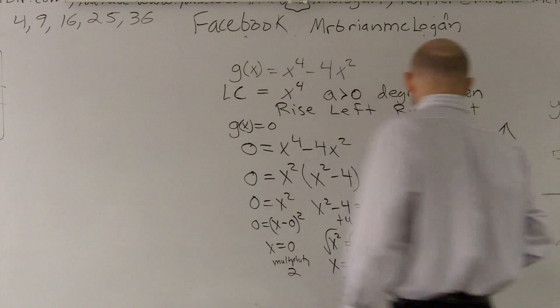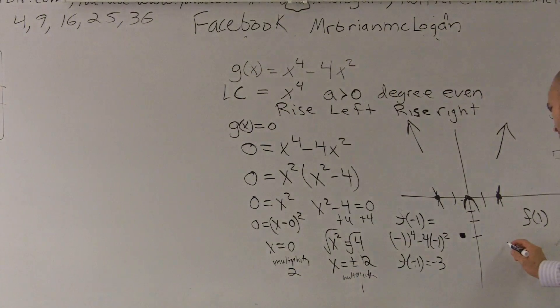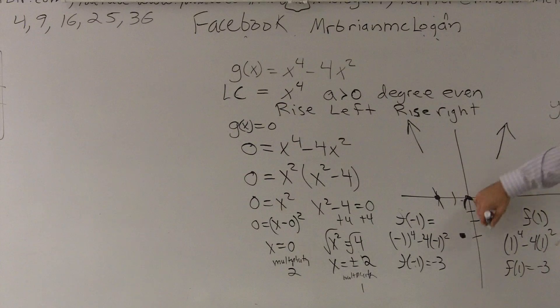f of 1 would be the exact same thing. So that's going to give me 1 raised to the 4th power minus 4 times 1 squared. f of 1 equals negative 3. So then I go down to here.